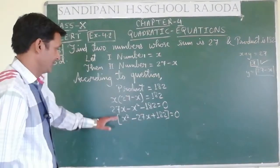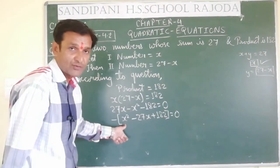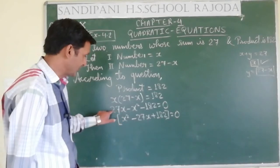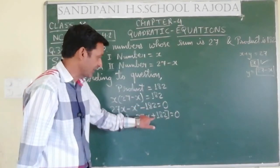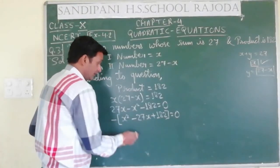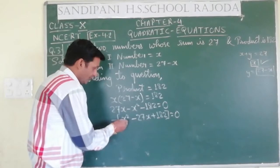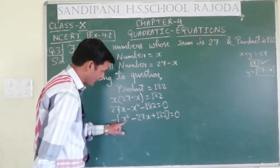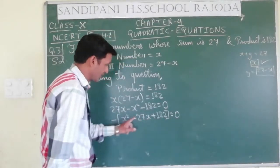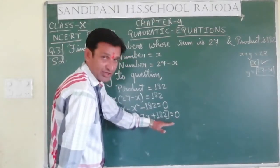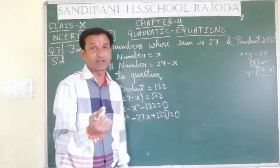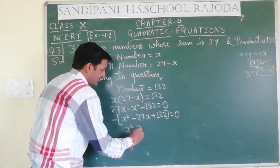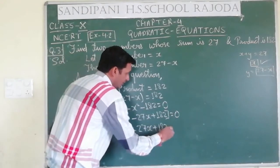We take the minus sign common to make the coefficient of x² positive. The negative term becomes positive, the positive term becomes negative, and the negative constant becomes positive. Also remember to write variables in descending order of powers: x² first, then x, then the constant — that is the standard form of a quadratic equation as discussed in previous lectures. So x² minus 27x plus 182 equals 0.